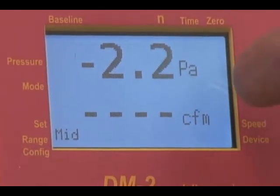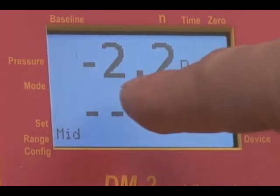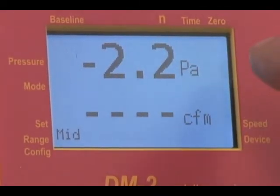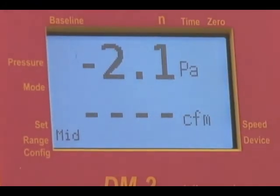This is an example here where on a relatively cold day around freezing, I have a minus 2.2 Pascal bias pressure and we're going to try and get rid of that using the baseline function.